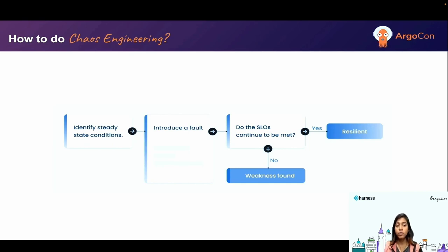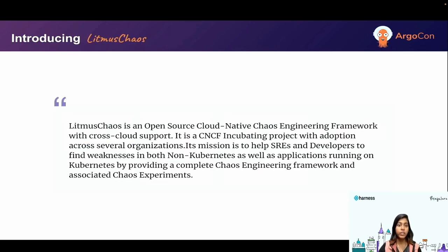Here's how chaos engineering is done. First, you identify the steady state conditions — the desired behavior of the application when it is healthy. Then you introduce the fault intentionally and check whether the SLOs continue to be met. If yes, that's great. If not, we can fix the issues and then repeat the same cycle again.